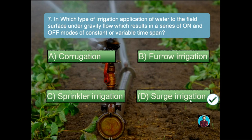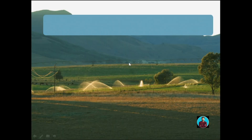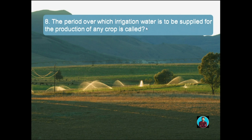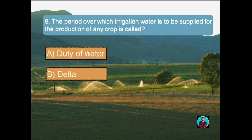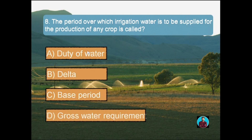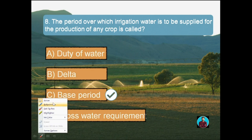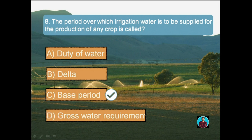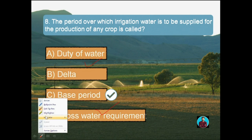Question number eight: the period over which irrigation water is to be supplied for the production of any crop is called? Option A: Duty of water, Option B: Delta, Option C: Base period, Option D: Gross water requirement. The right answer is base period. Duty of water is the area of land that can be irrigated with a unit volume of irrigation water. Delta is the depth of water required to raise a crop over a unit area across the base period. Gross water requirement is the total amount of water, including losses, applied through irrigation.